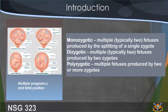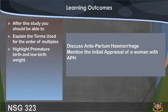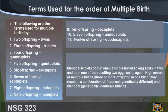Monozygotic multiples typically involve two fetuses produced by the splitting of a single zygote. Dizygotic multiples typically involve two fetuses produced by two zygotes. Polyzygotic multiples are fetuses produced by two or more zygotes. Learning outcomes: after this study session, you should be able to explain the terms used for the order of multiples, highlight premature birth and low birth weight, discuss antepartum hemorrhage, and mention the initial appraisal of a woman with APH.